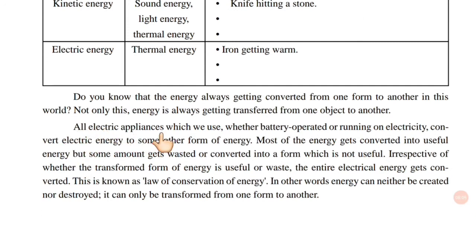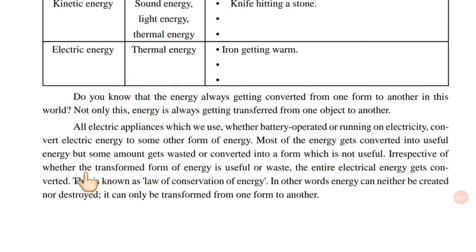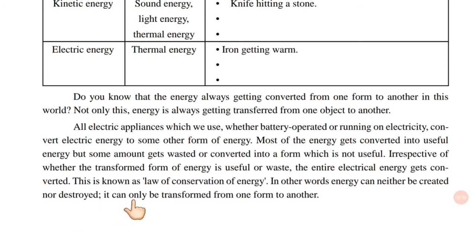All electric appliances which we use, whether battery-operated or running on electricity, convert electric energy to some other forms of energy. Most of the energy gets converted into useful energy, but some amount gets wasted or converted into a form which is not useful. Irrespective of whether the transformed form of energy is useful or waste, the entire electrical energy gets converted. This is known as the law of conservation of energy. In other words, energy can neither be created nor destroyed — it can only be transformed from one form to another.